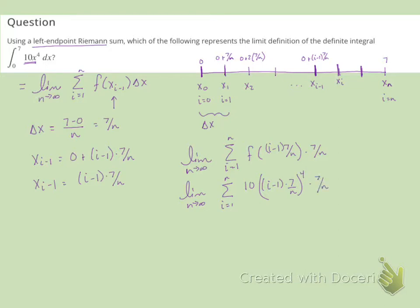Well, I can distribute that fourth power through. So I'll have the sum from i equals 1 to n of 10 times i minus 1 to the fourth times 7 to the fourth over n to the fourth times 7 over n. And I can pull anything that doesn't have an i associated with it in front of the Riemann sum, giving us the limit as n approaches infinity of 10 times—I've got a 7 to the fifth power here since I've got a 7 to the fourth and a 7 to the first, so this would be 7 to the fifth.